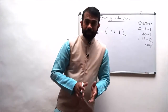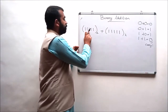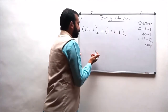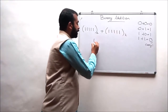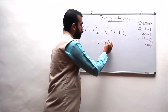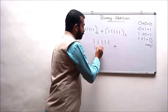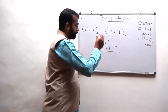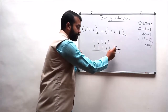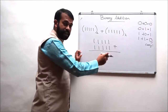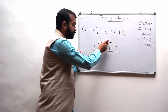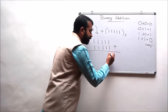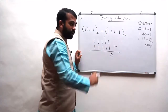In the second example, we are adding 1 1 1 1 1 1 plus 1 1 1 1. We are writing it as 1 1 1 1 1 1 plus 1 1 1 1. When we are adding this, we are starting from the least significant bit or LSB. The LSB is 1 plus 1 — 1 plus 1 is 0 with a carry of 1.